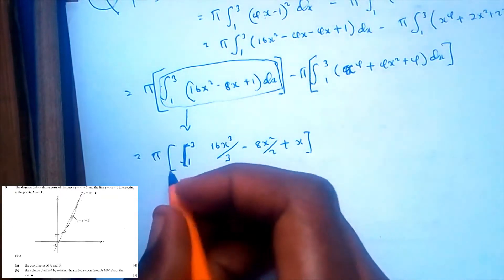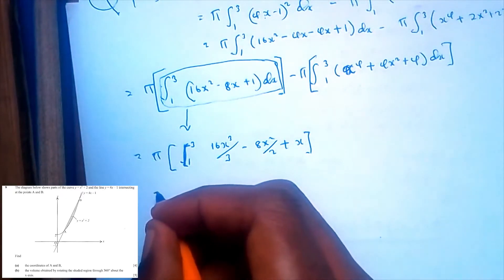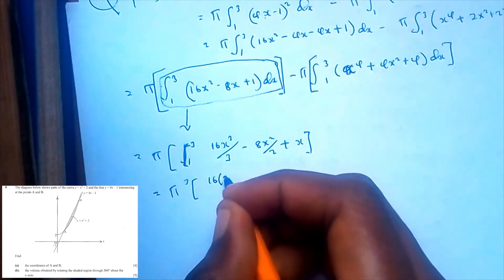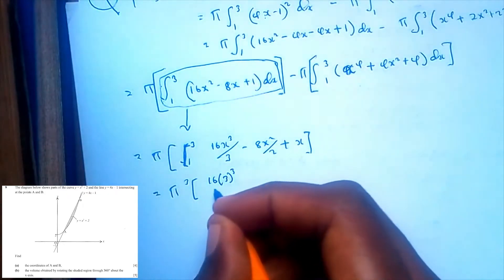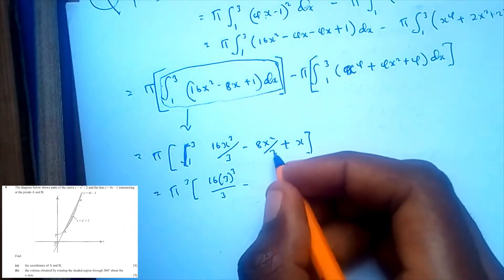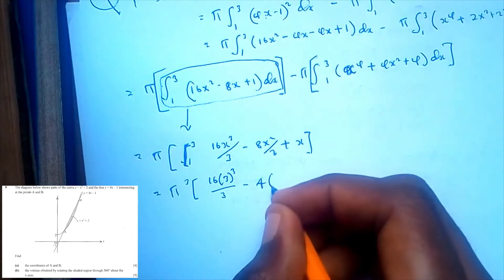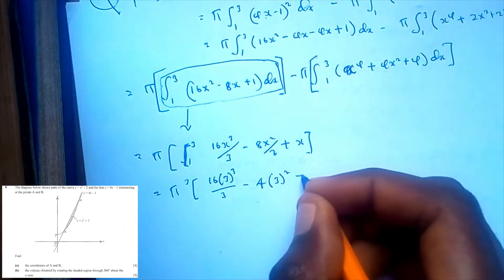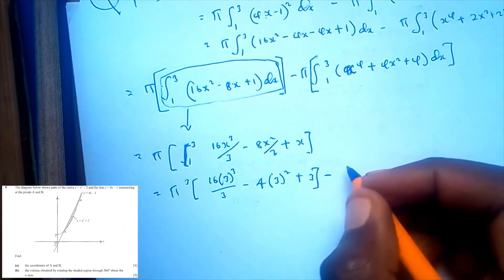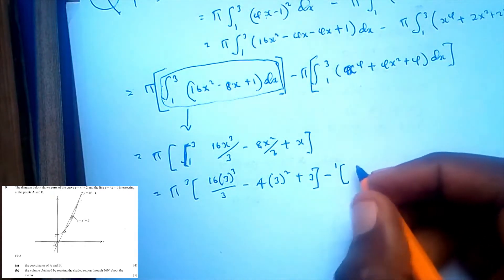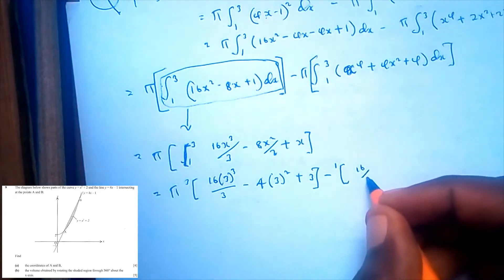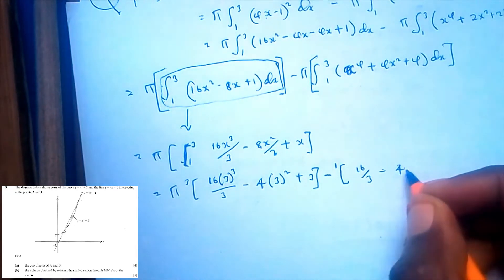This will be equal to pi. For x equals 3: 16 times 3 cubed over 3, minus 4 times 3 squared, plus 3. And for x equals 1 (the lower bound): 16 times 1 cubed over 3, minus 4 times 1 squared, plus 1.